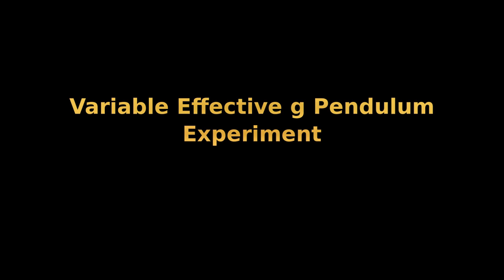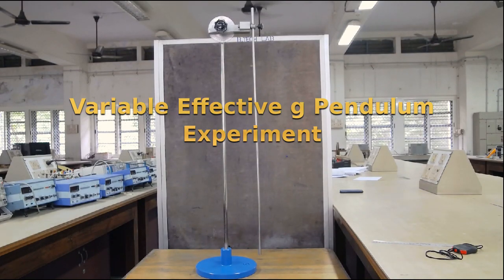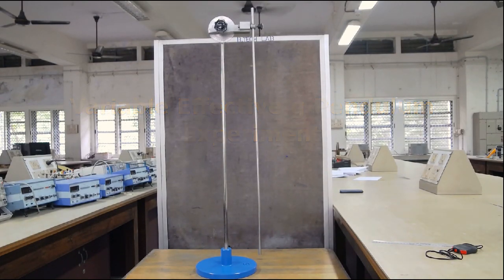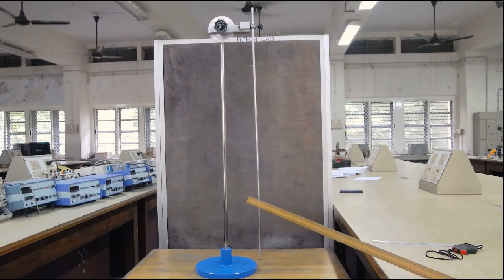Hello everyone, we are going to perform the variable effective g pendulum experiment. The aim of this experiment is to determine the acceleration due to gravity by means of a compound pendulum and also to find the radius of gyration about an axis through the center of gravity for the compound pendulum.